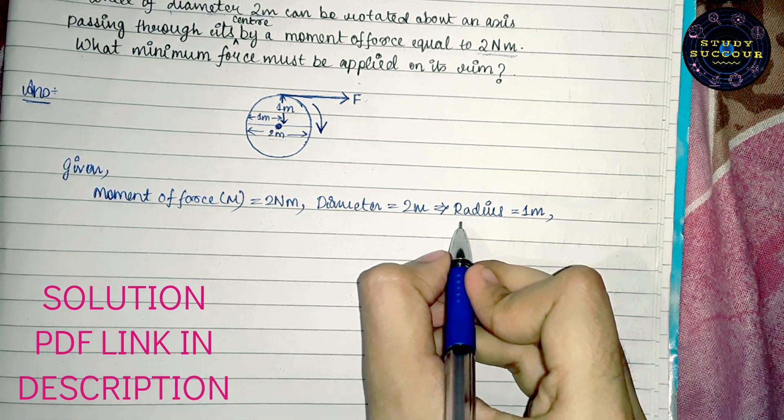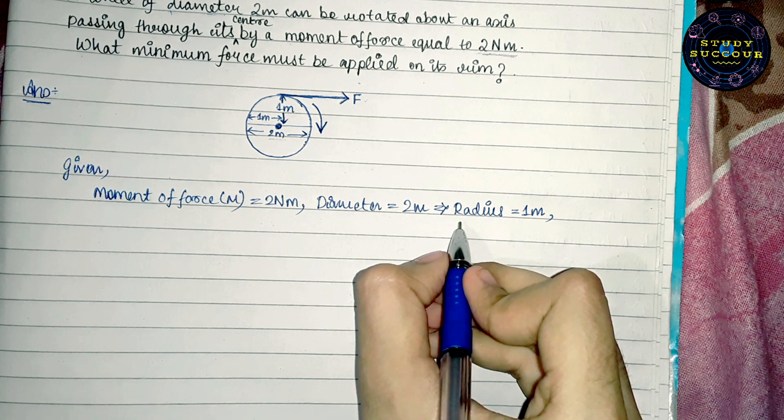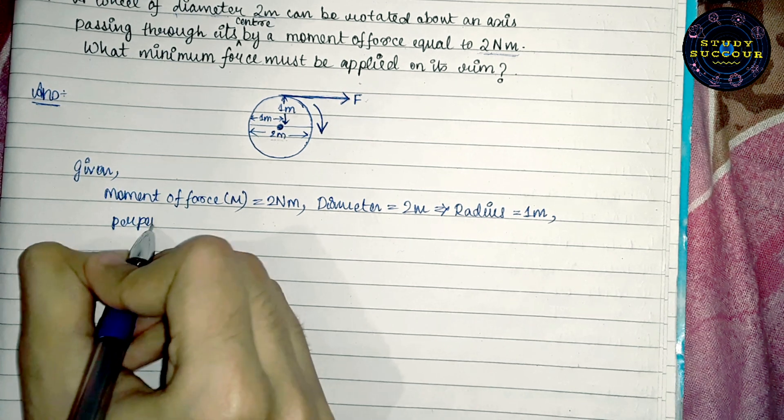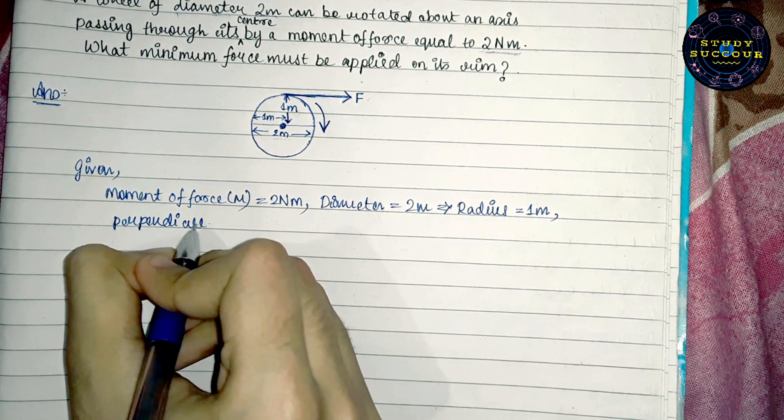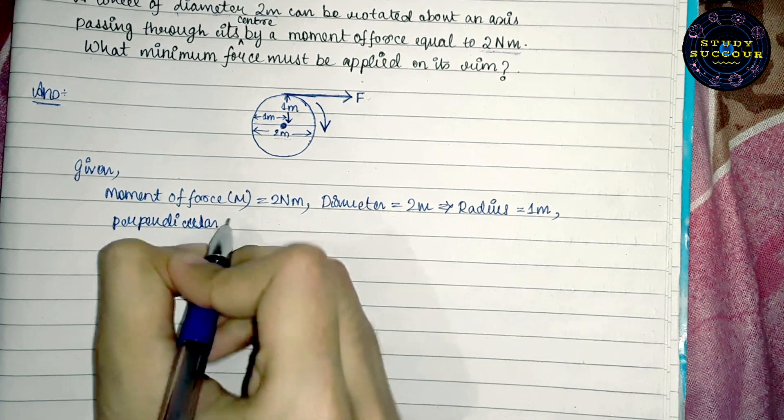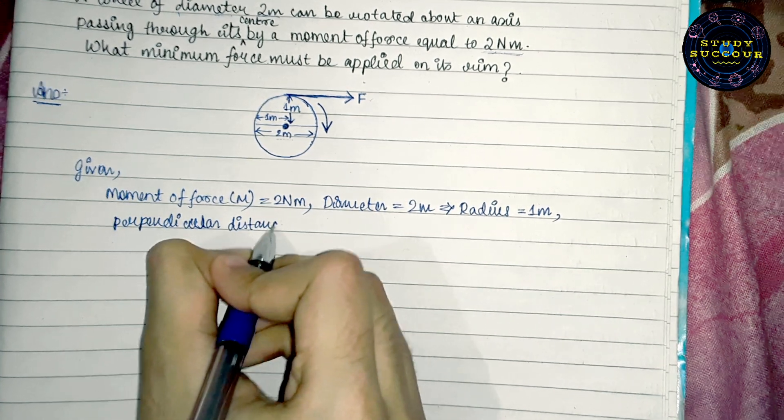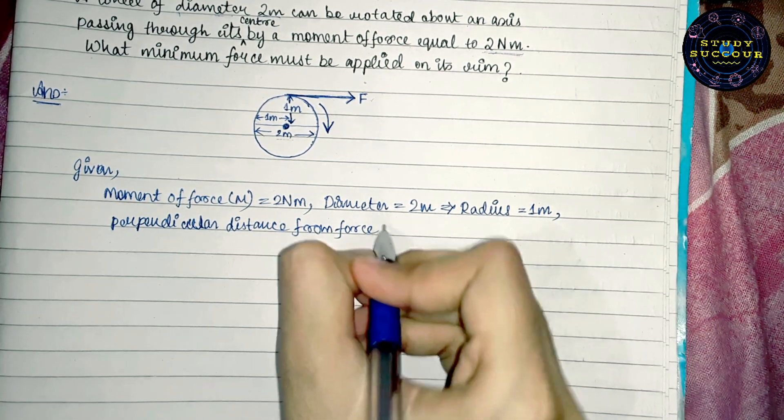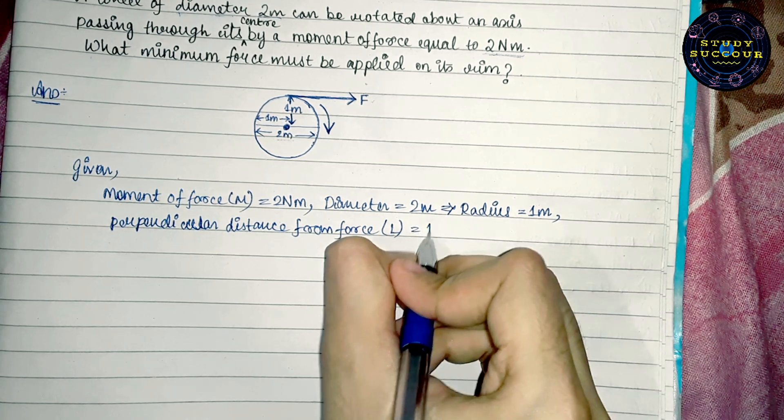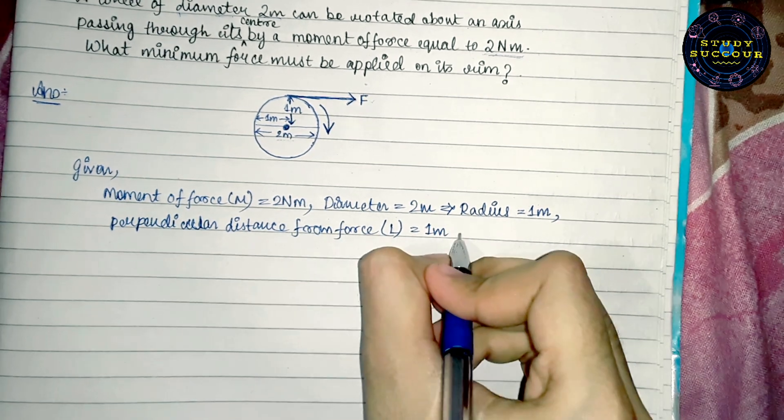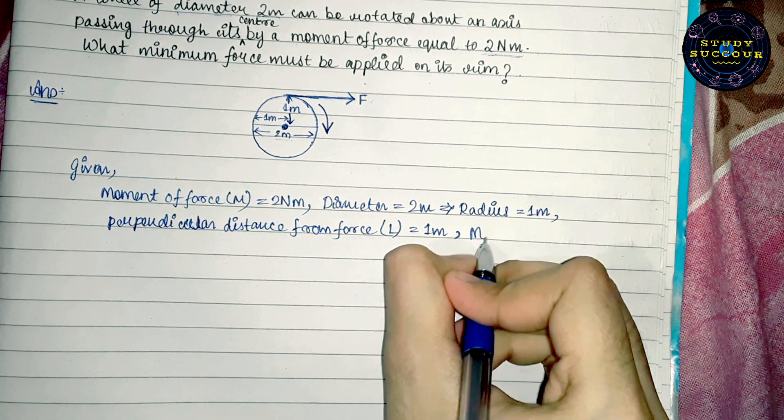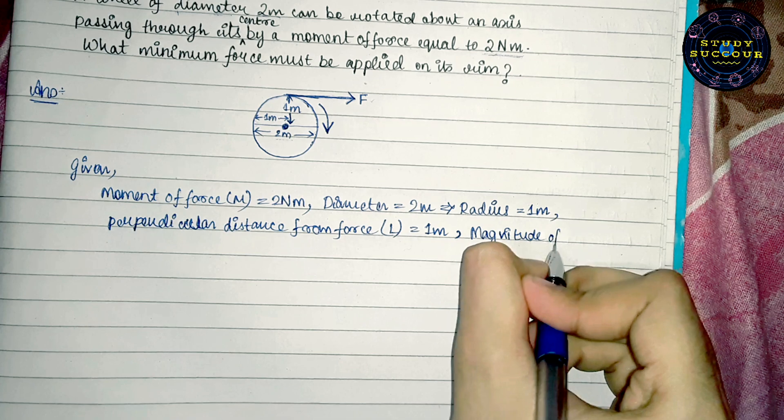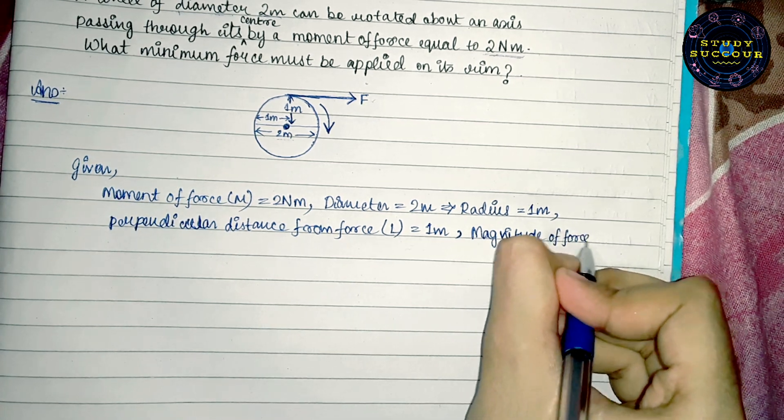Also, we know that this radius is also the perpendicular distance from the force. So, the perpendicular distance from the force denoted by L is equals to 1 meter and we have to find the magnitude of the force denoted by F.